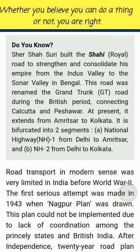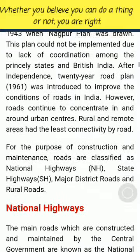At present, it extends from Amritsar to Kolkata. It is bifurcated into two segments: (a) National Highway NH-1 from Delhi to Amritsar, and (b) NH-2 from Delhi to Kolkata. Road transport in modern sense was very limited in India before World War II. The first serious attempt was made in 1943 when the Nagpur Plan was drawn. This plan could not be implemented due to lack of coordination among the princely states and British India. After independence, a 20-year road plan (1961) was introduced to improve road conditions, but roads continued to concentrate in and around urban centers.